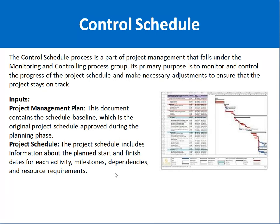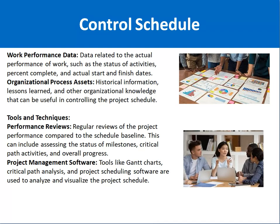Another input is the Project Schedule, which includes the planned start and finish dates for each activity, milestones, dependencies, and resource requirements. The Work Performance Data is also an input — it represents the actual performance of work, including the status of activities, whether they are complete or not, percent complete, and actual start and finish dates. Organizational Process Assets include historical information, lessons learned, and organizational knowledge from past projects.